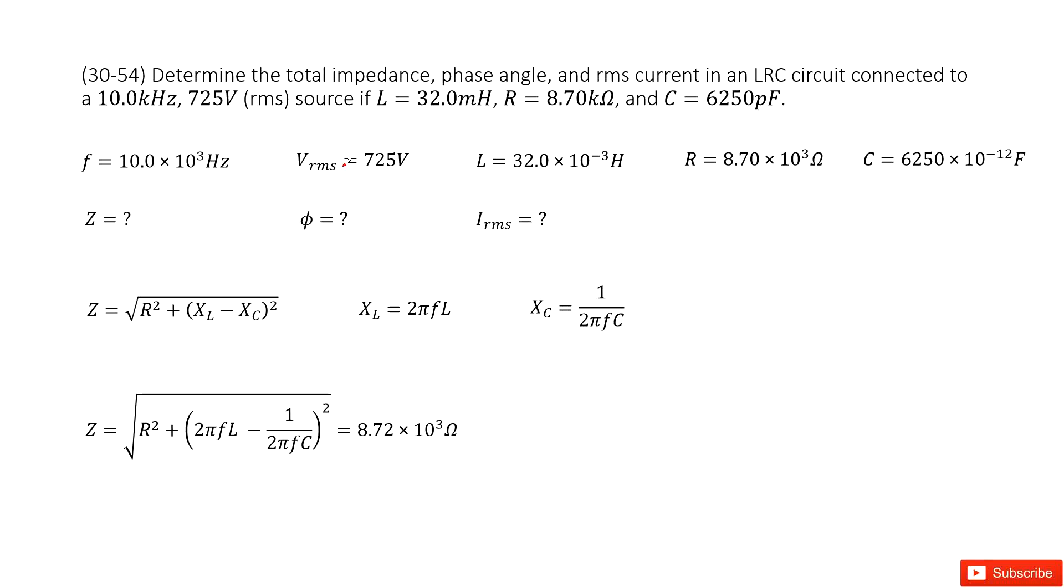So you can see we have an RLC circuit and the quantities are given there. We also know the root mean squared voltage for this circuit is 725 volts, and the frequency is also given. So first, we need to find impedance, phase angle, and the root mean squared current.